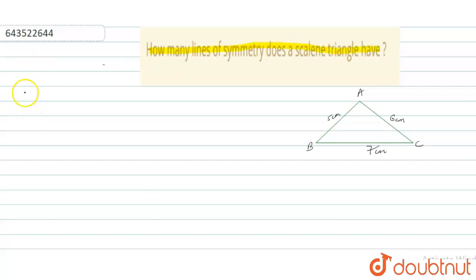So what is a scalene triangle? A scalene triangle is a triangle which doesn't have any similar side. So all sides are of different measures, right?